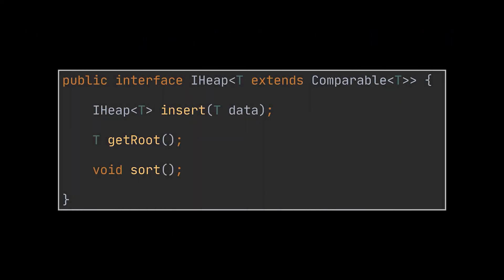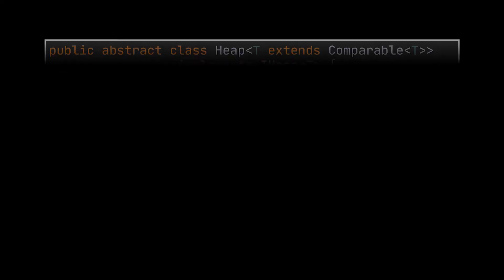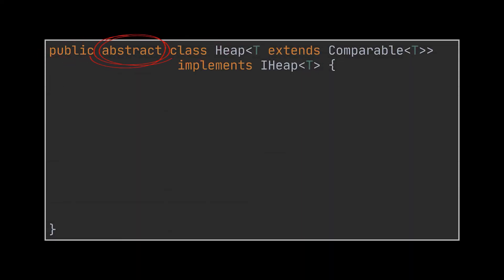Now let's try to implement these operations for both the maximum and minimum heaps. The first thing I did was create the interface of our heap class. In this interface you can see the insert method which will insert an item to the heap, the get root method which will remove the root node from the heap and return it, and finally the sort method which will sort our heap array using the heap sort algorithm. We will expand on this algorithm further in a bit, but for now let's try to implement the insert and get root methods.